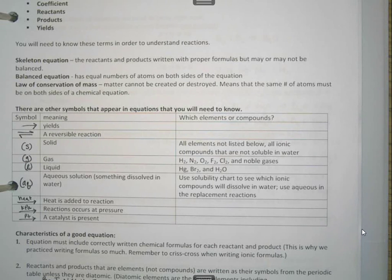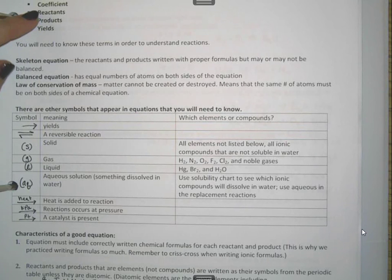Let's talk about some basic info for chemical reactions. I have some words that we need to know in order to deal with chemical reactions: coefficient, reactants, products, and yields.